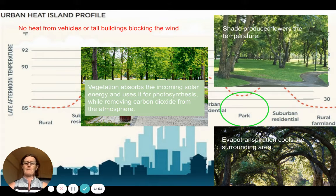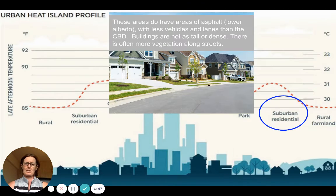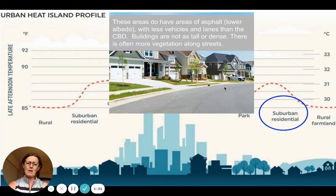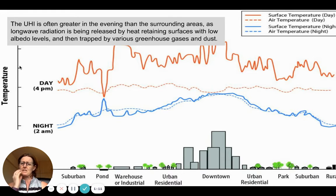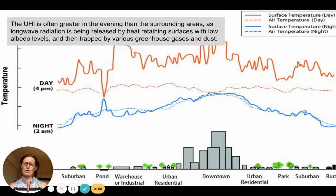In suburban residential areas, buildings are not as tall so they don't block wind as much. There are fewer vehicles, but there is generally still an impermeable surface. Along pavements you do see some trees. There's less evapotranspiration and less infiltration compared to a park. In the evening, the temperature difference would be much greater because the inner urban area releases the longwave radiation it has trapped throughout the day, and greenhouse gases in the atmosphere also trap more of that radiation.